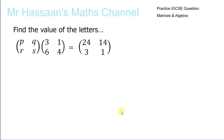Here I've been asked to answer this question from one of my presentations. It's a question where we have to find the missing letters. We know two matrices are multiplied by each other to give us this answer, and we've got to find the values of P, Q, R, and S.